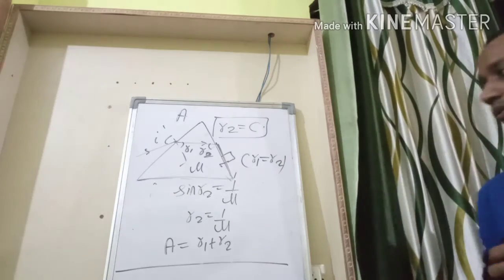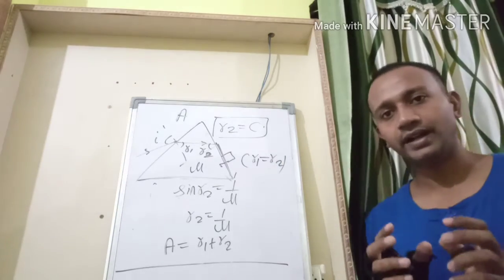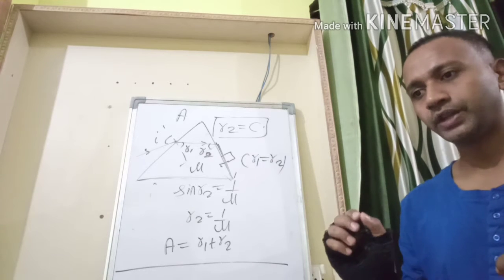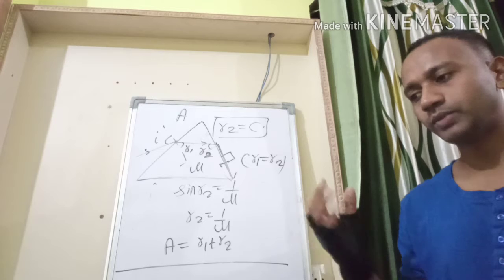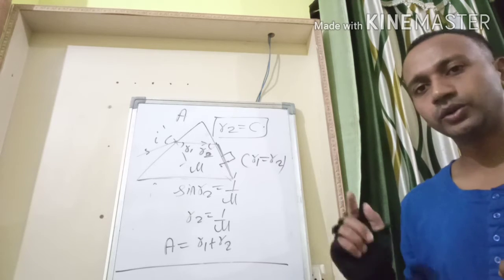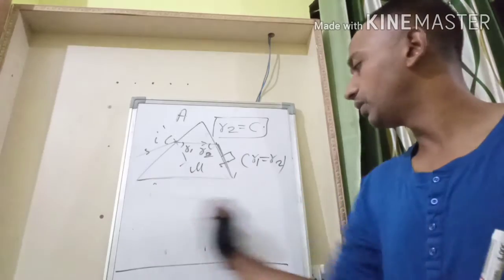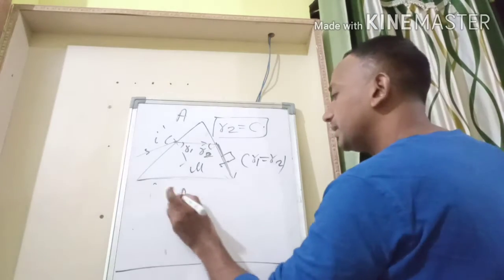We want to keep the deviation minimum, so we will take r1 equal to r2. So what we have done so far: we have applied TIR at the second surface, for which we have got the value of r2, sine r2 equal to 1/μ. It being a small angle, we replace r2 by 1/μ. Since A equals r1 plus r2 and both angles are equal, I'll put the value of r2 in place of r1.